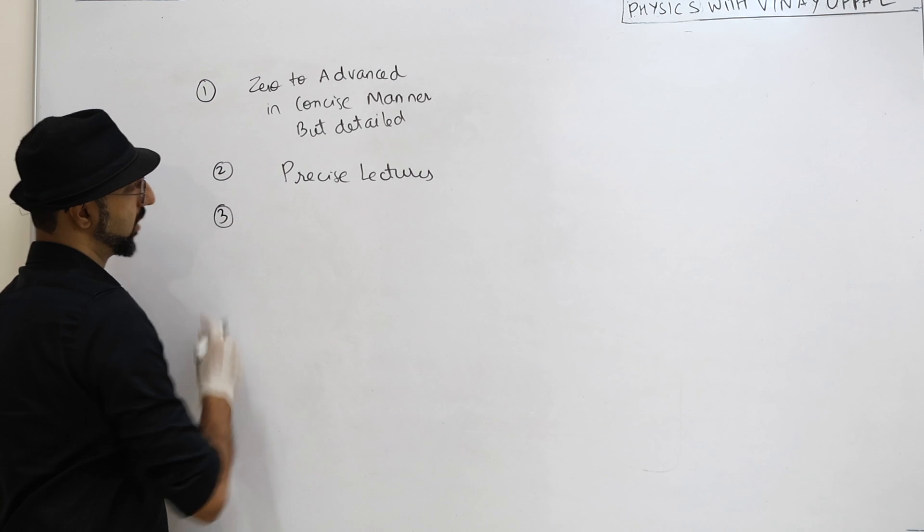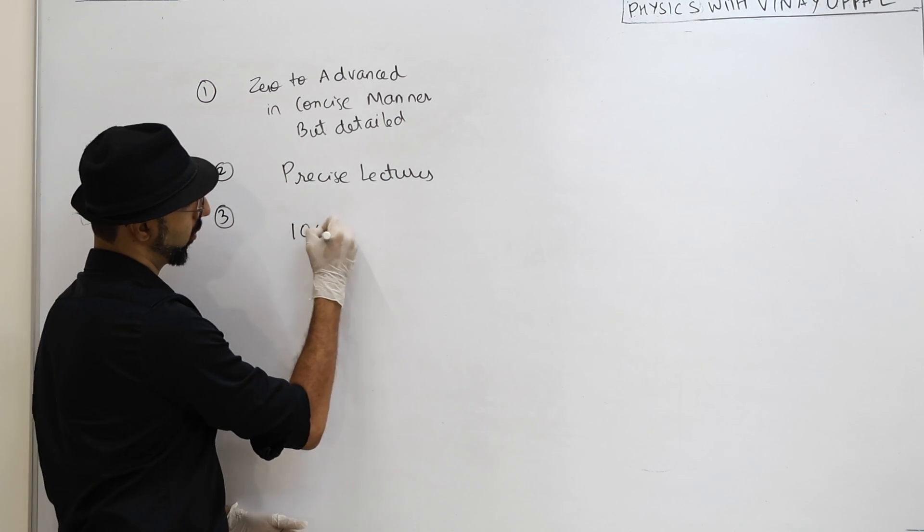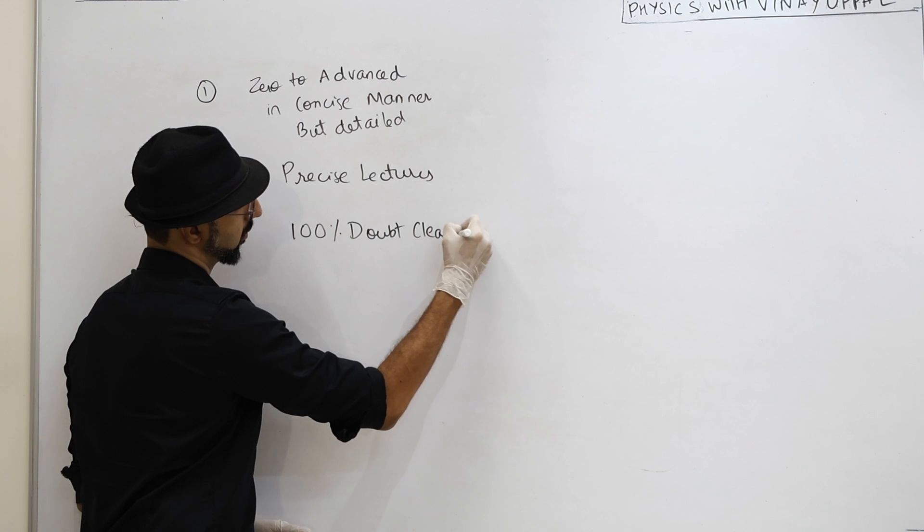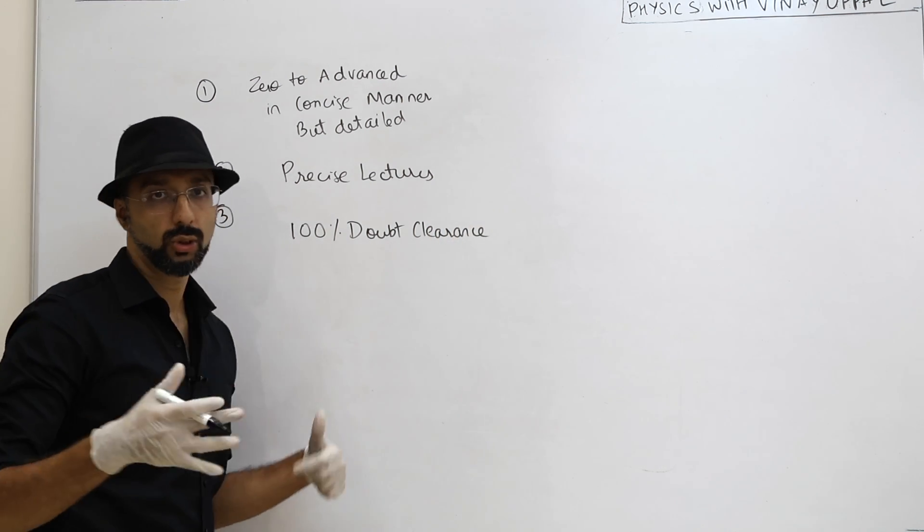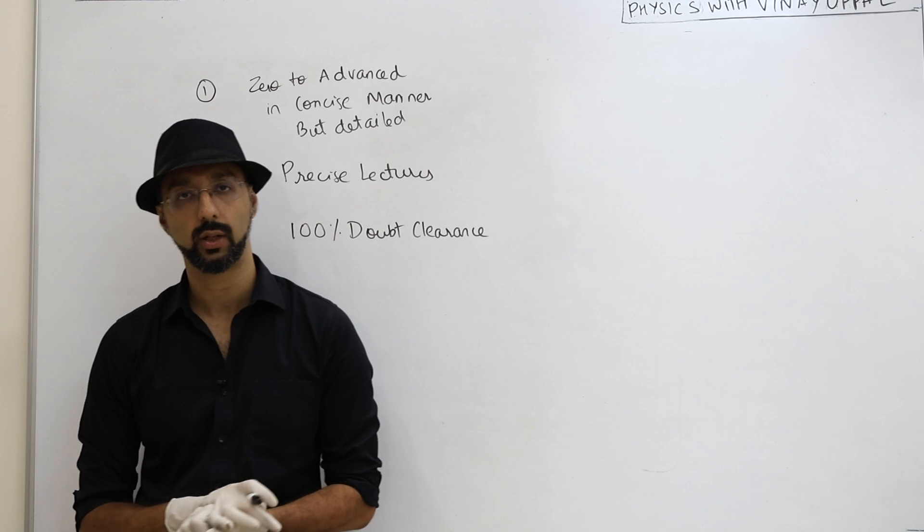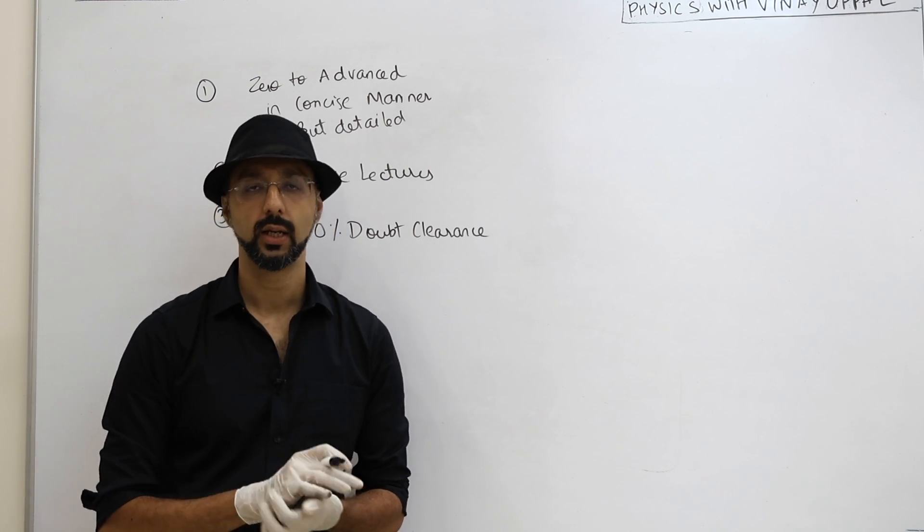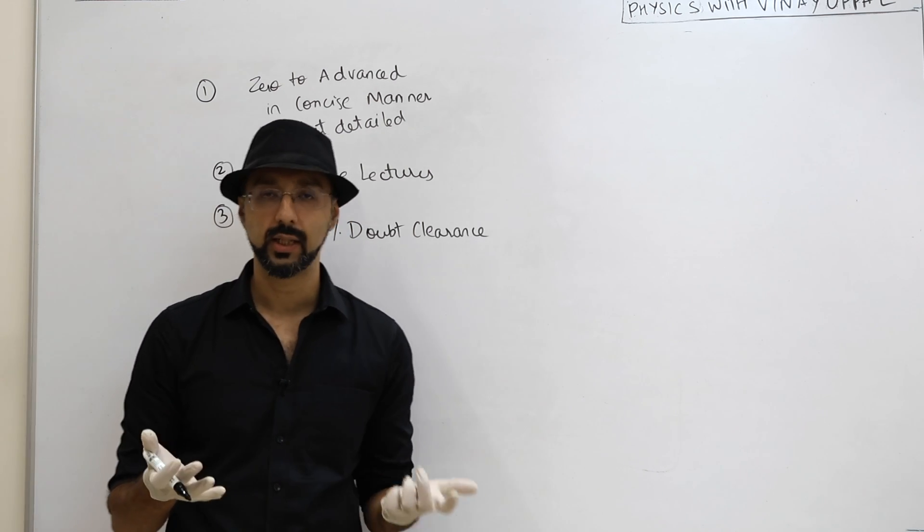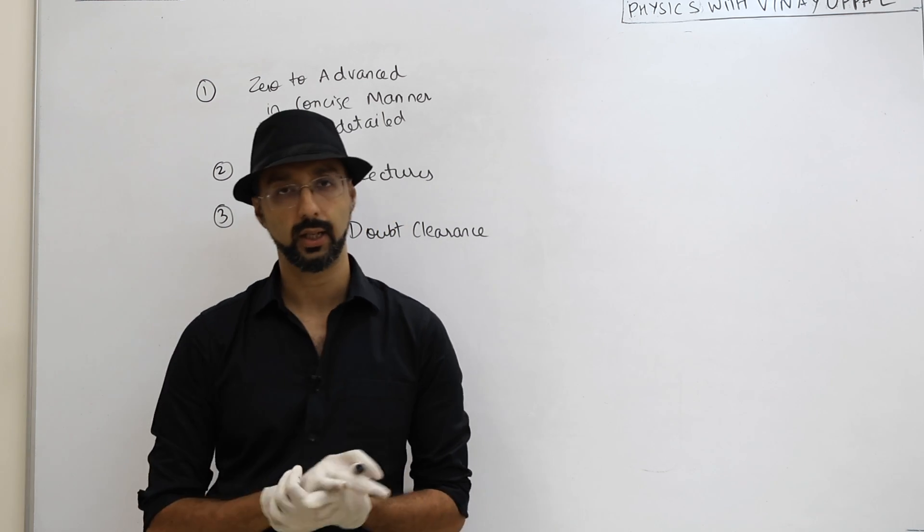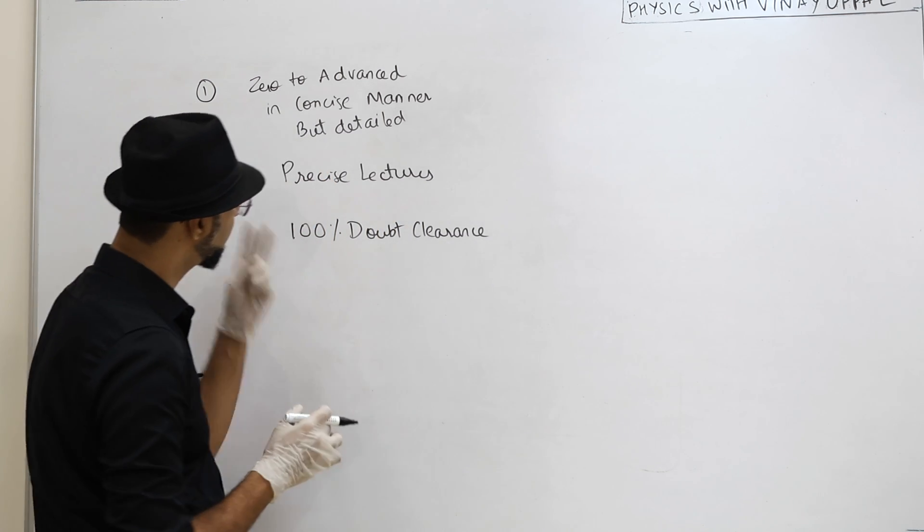And third, probably the most important, 100% doubt clearance. Preferably by the teacher who is teaching. Like I do in my course, I will clear them. 100% doubt clearance. Every single doubt is cleared by me. And generally within the same day, I will clear them in 24 hours. So these three requirements are these three features that my students have.